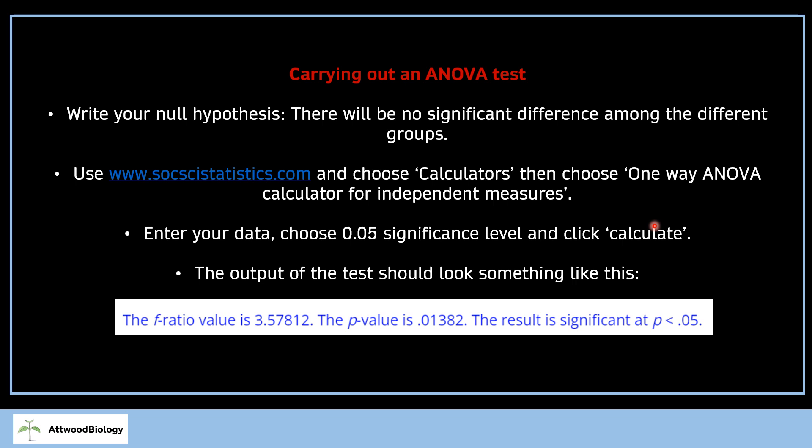Now, 0.05 significance is what we always use in biology, and it means that there is a 5% probability that the results are due to chance rather than the variables that you're testing. The output of the test should look something like this. It's quite a few tables, so you have to scroll down to find this. But we're looking for the F ratio value and the P value.